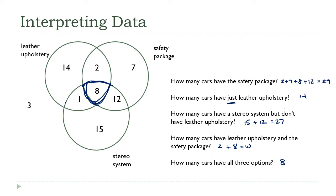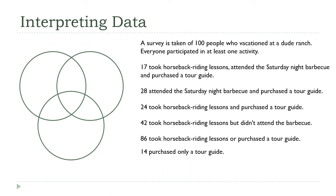That's how we can answer questions using this diagram. It helps us visualize how these different packages are distributed among the cars on the lot. Now we're going the other way — I've been given results about people at a ranch that offers three amenities: horseback riding, a barbecue, and a tour guide. I've been given information about how many people took different combinations, and I want to put this into a Venn diagram.